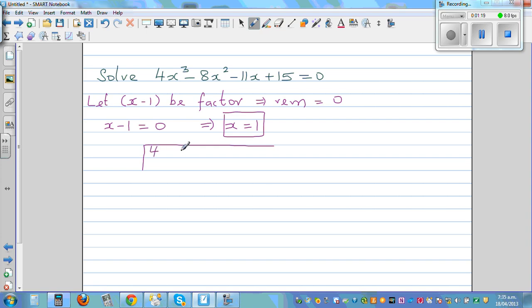which is 4, negative 8, negative 11, and 15. So you've got all the coefficients of x cubed, x squared, x, and the constant. And you're dividing by 1, so you write a 1 here. And you always start with a 0 here.